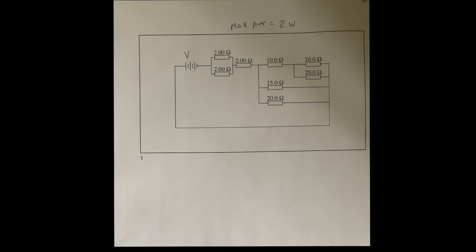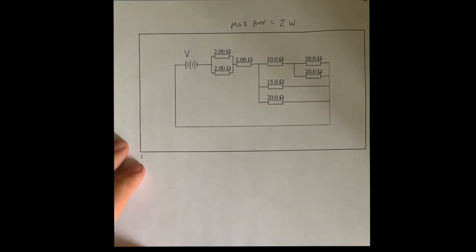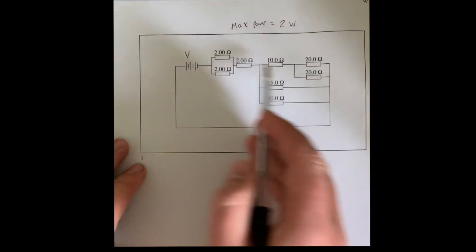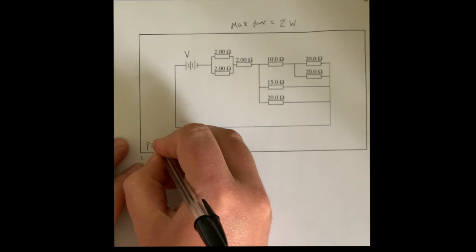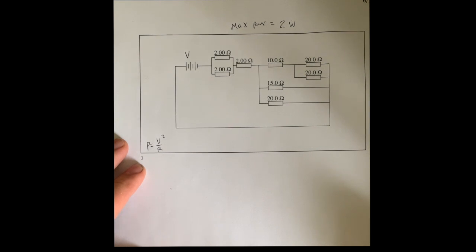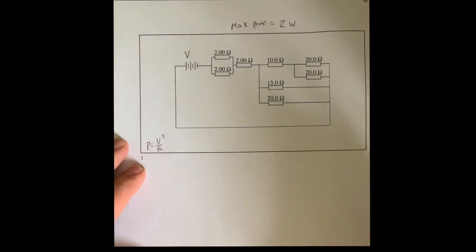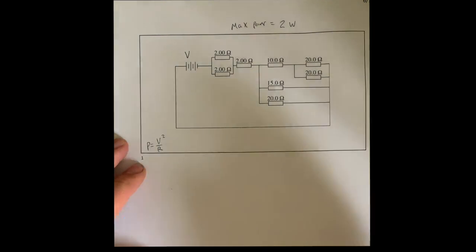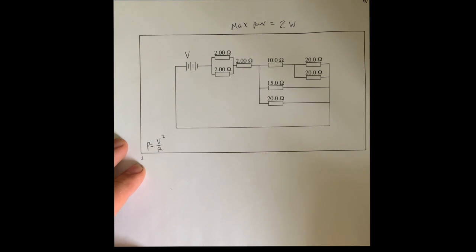So we're trying to find the resistor that dissipates most power. I've said that let's say that the cells give out a voltage V and I'm going to then use that to work out the share of voltages that these resistors will have. When I've done that I can use the formula that power is equal to potential difference squared divided by resistance to work out the power. I guess the first thing is finding the total resistance.